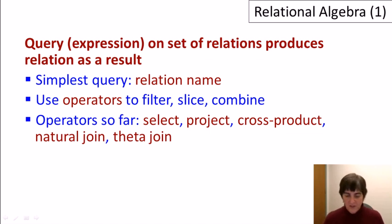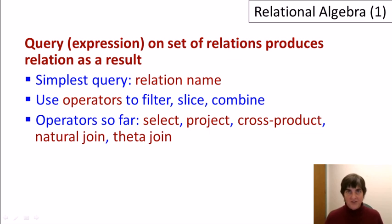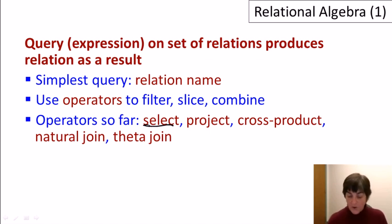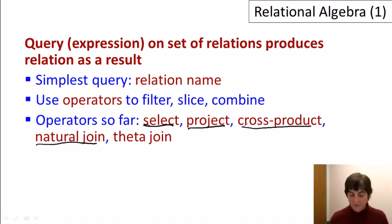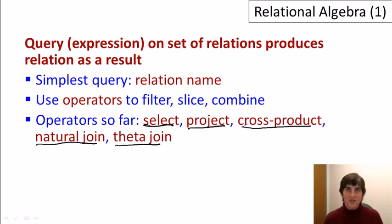In conclusion, relational algebra is a formal language that operates on sets of relations and produces relations as a result. The simplest query is just the name of a relation, and operators are used to filter, slice, and combine relations. We've covered: the select operator (selecting rows), the project operator (selecting columns), the cross product (combining all tuple pairs), and two abbreviations — the natural join (combining relations by enforcing equality on shared columns) and the theta join. In the next video we'll learn additional operators and alternative notations for relational algebra expressions.